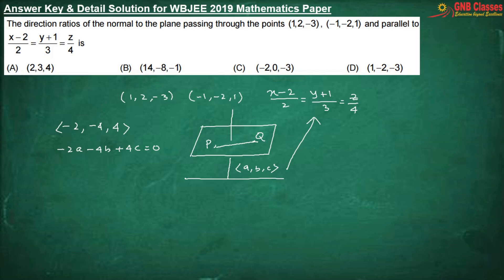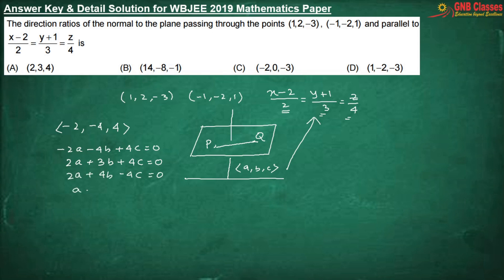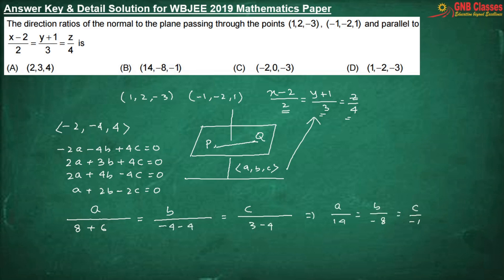The normal to the plane is also perpendicular to the given line, which has direction ratios 2, 3, and 4. So we write: 2A + 3B + 4C = 0. Solving these two equations by cross multiplication, the direction ratios of the normal to the plane are 14, −8, −1.